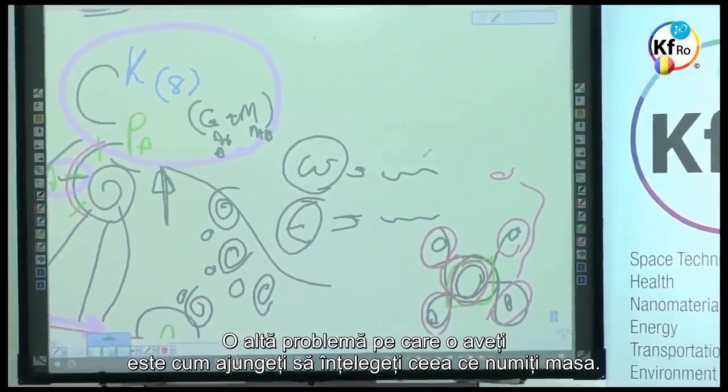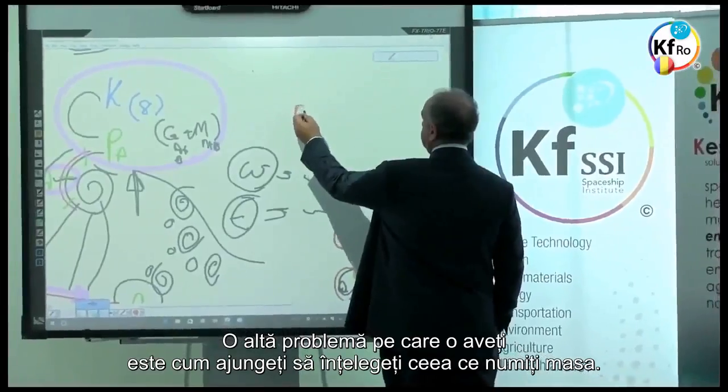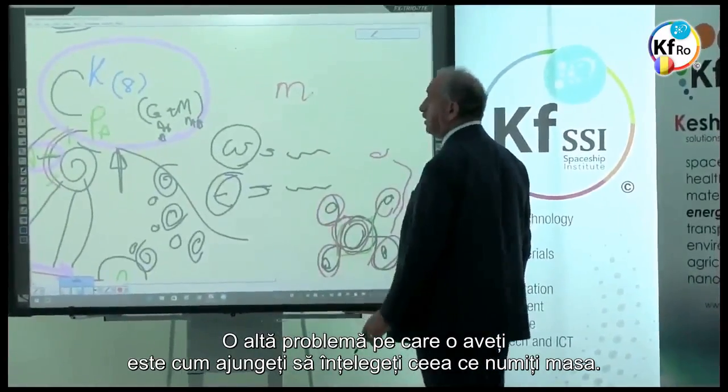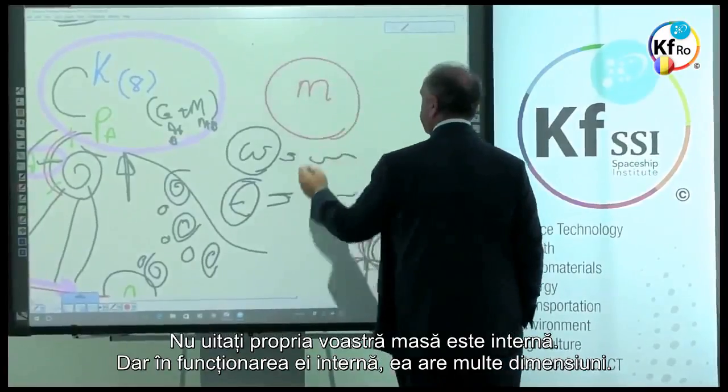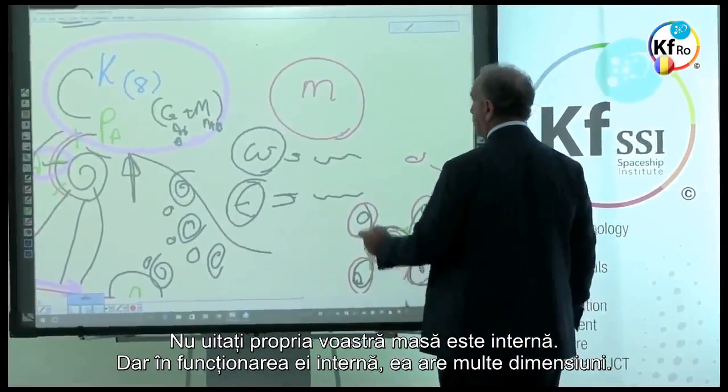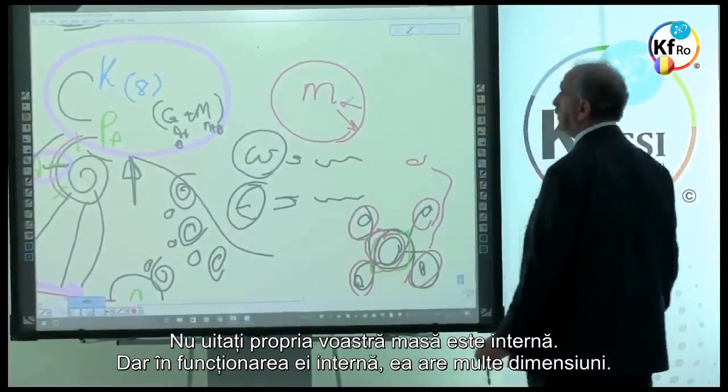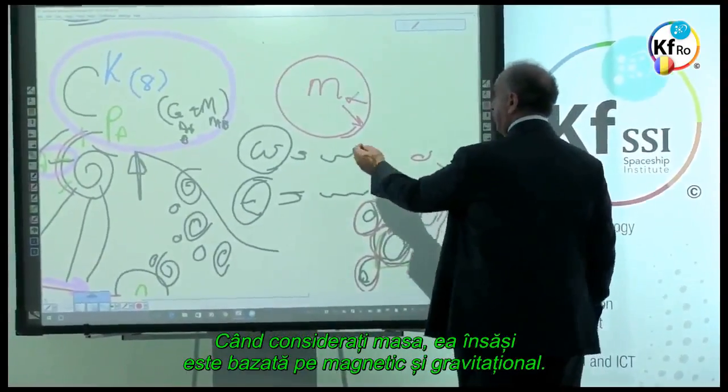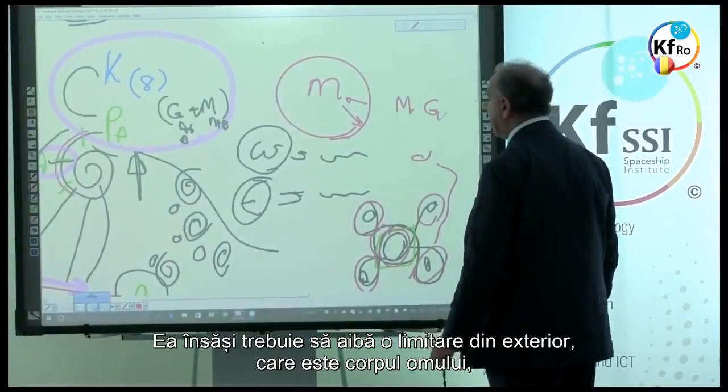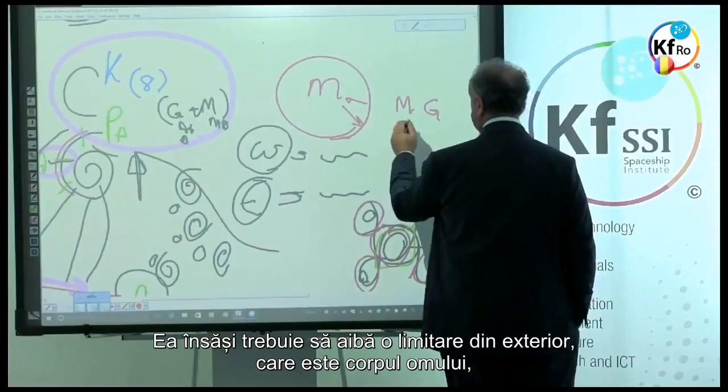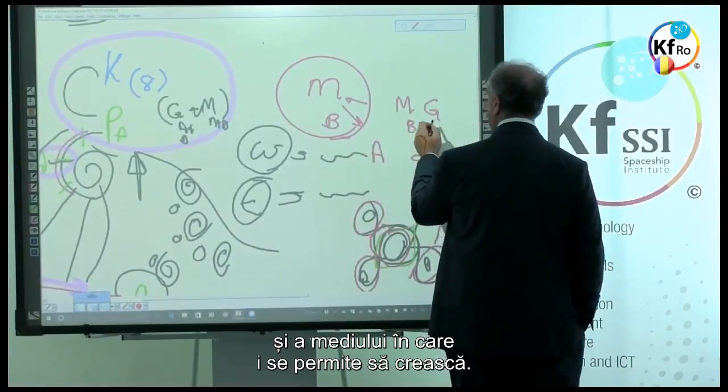The other problem you have is how do you again go on understanding what you call the mass. Don't forget, your own mass is internal, but in its internal operation has many dimensions. When you consider the mass itself is magnetic and gravitational-based, itself has to have a limitation of itself, which is the body of the man and its environment which allows it to grow into.